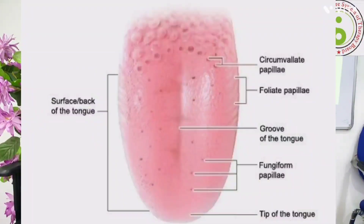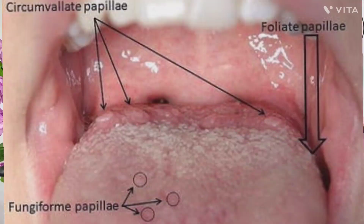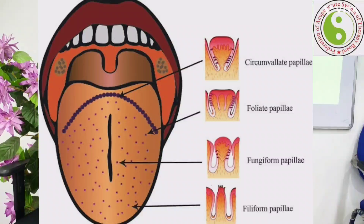The tongue has a tip, sides, and a root. Normally, the tongue is divided into three segments: the anterior one-third, the middle one-third, and the posterior one-third — roughly 1.25 inches each — so: tip, center, then root. Inside, there are four types of papillae: fungiform papillae, filiform papillae, foliate papillae, and circumvallate papillae.